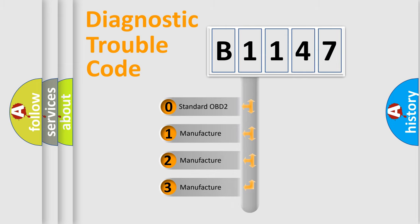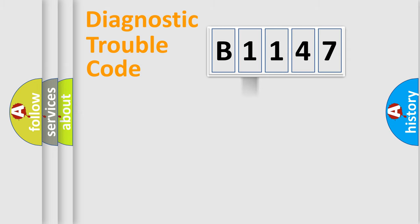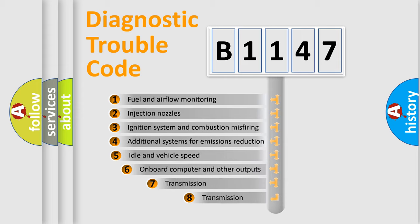If the second character is expressed as zero, it is a standardized error. In the case of numbers 1, 2, or 3, it is a more prestigious expression of the car-specific error.